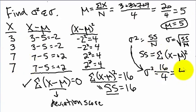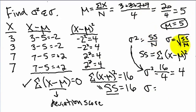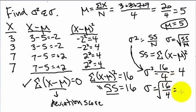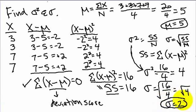The standard deviation equals the square root of SS over n. SS over n is 16 over 4, and the square root of 16 over 4 is the square root of 4, which equals 2. So in this example, the standard deviation is equal to 2 and the variance is equal to 4.